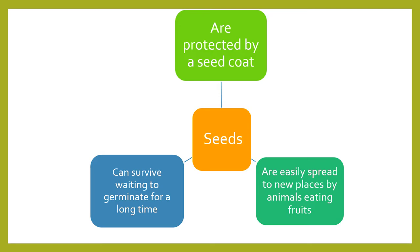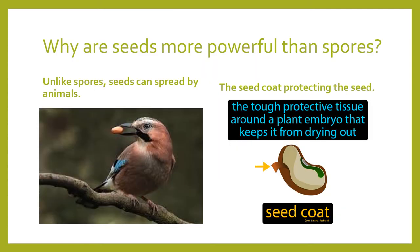Spores don't have a seed coat, they don't have stored food, and they will only germinate if they land in a really damp place. That's why seeds have an advantage. Seeds can spread by animals, which is important because plants need space — they can't land where the mother plant is because it would be too crowded. It's very important for a seed to travel to a whole new place, and animals help with this.